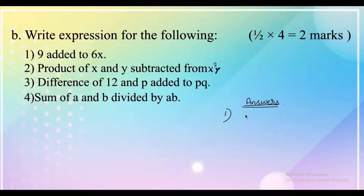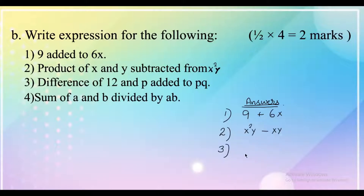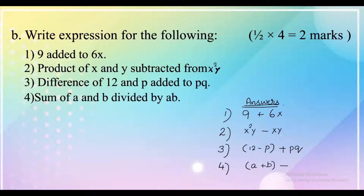The answers are as follows. First, 9 added to 6x is written as 9 plus 6x. Second, the product of x and y subtracted from x square y is x square y minus xy. Third, difference of 12 and p added to pq is 12 minus p plus pq. Fourth, sum of a and b divided by ab is a plus b divided by ab.